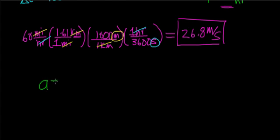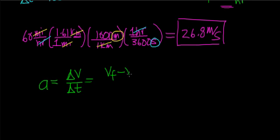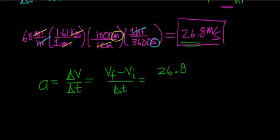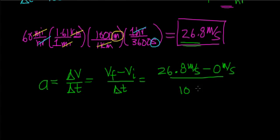Now to calculate the acceleration of the car, we go back to the definition of acceleration, which says that acceleration is a change in velocity per change in time, or how fast the velocity changes. So in this case, it's going to be v_final minus v_initial divided by the time it takes to change that velocity. Our final velocity is going to be 26.8 meters per second, our initial velocity is going to be 0 meters per second, and the time it takes to change that velocity is going to be 10 seconds.